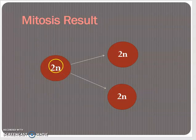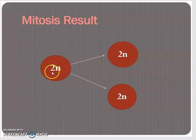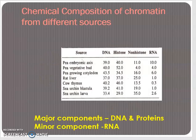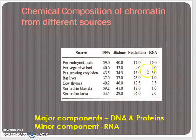Now come to mitosis. A cell having 2n number of chromosomes is divided into two cells having 2n number of chromosomes again. So what should we know? We should know the ingredients of the chromosome. Chromosomes are made up of DNA, RNA, and protein. Here is a chart showing the chemical composition of chromatin from different sources. You can see that DNA and protein are the major components and RNA is a minor component. RNA can correspond to elaichi, protein to Koya, and DNA to sugar.